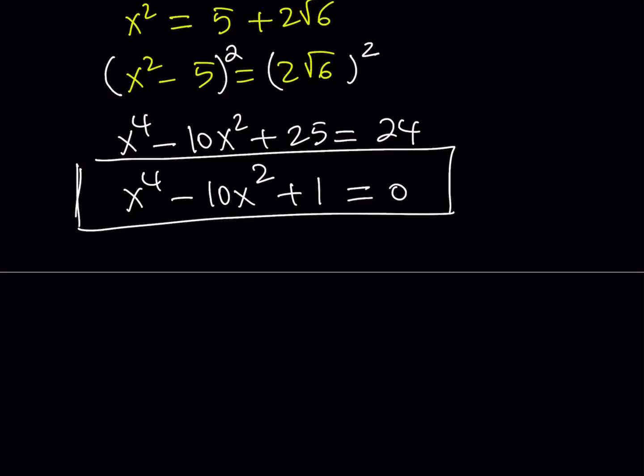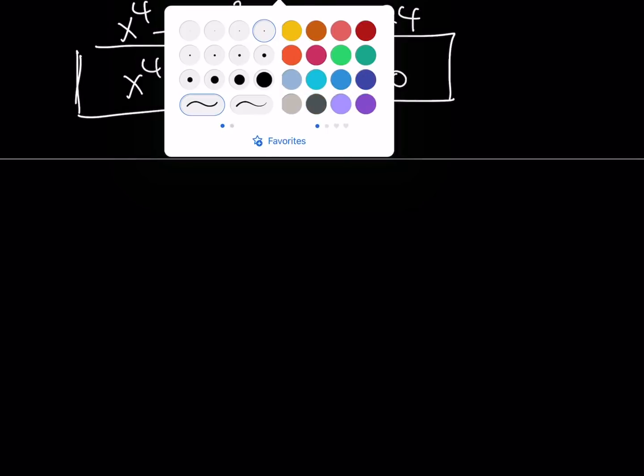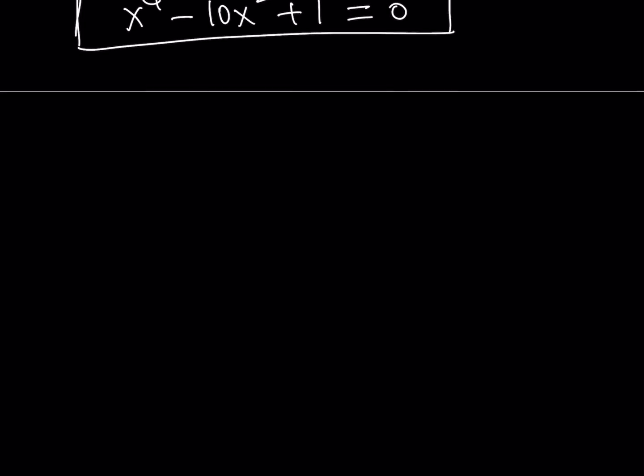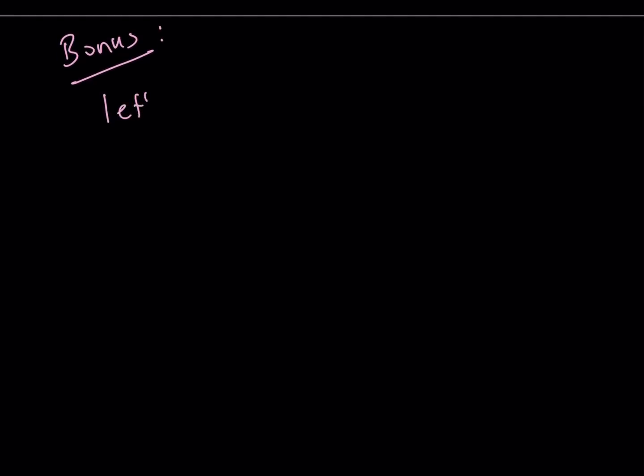Now here's a different look. I guess we can call this section bonus, or if you want to call it third method, analysis, whatever. Let's go ahead and take a look. Let's take a look at the equation x to the 4th minus 10x squared plus 1 equals 0. It's kind of like working backwards, and it's also checking our work. If I can solve this equation and find one of the roots to be root 3 plus root 2, I got it right. So how am I going to solve this equation?